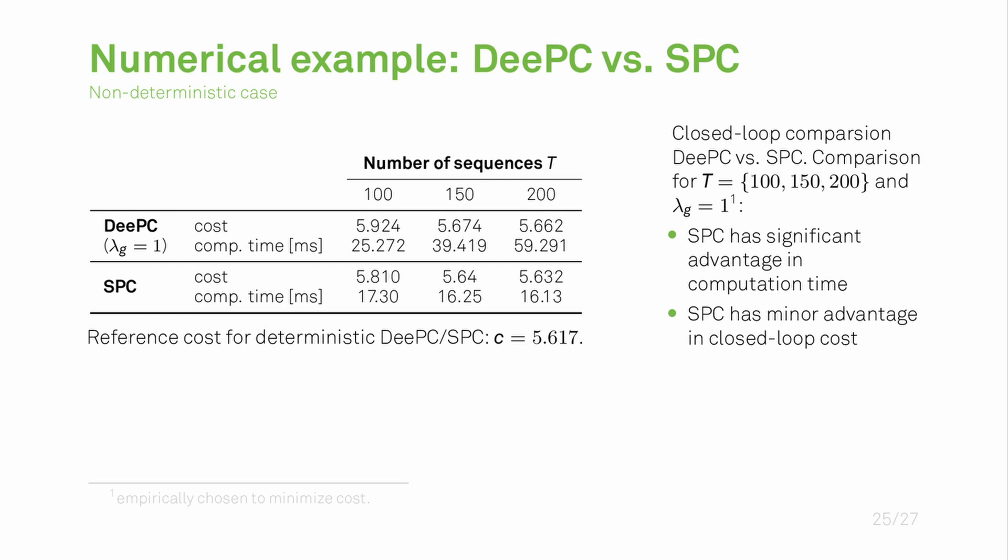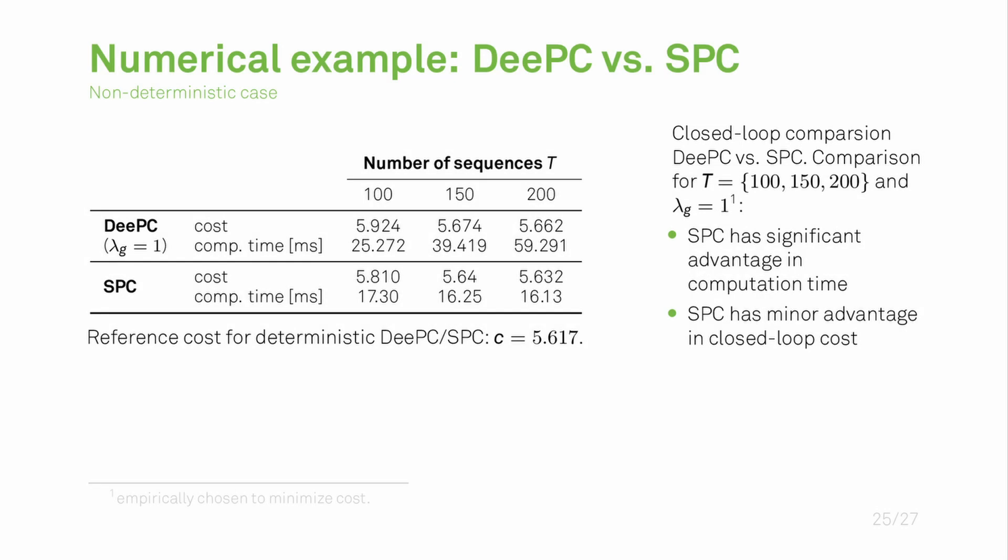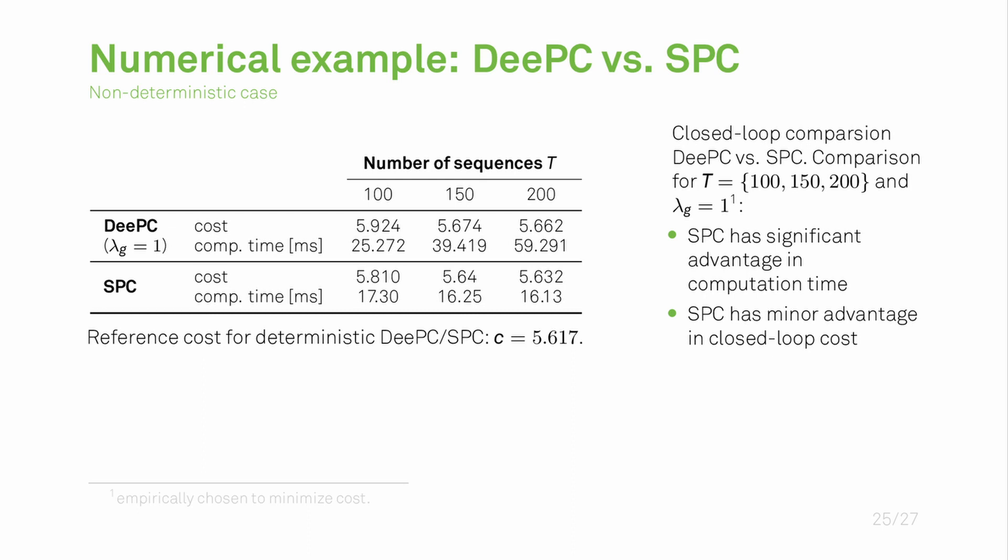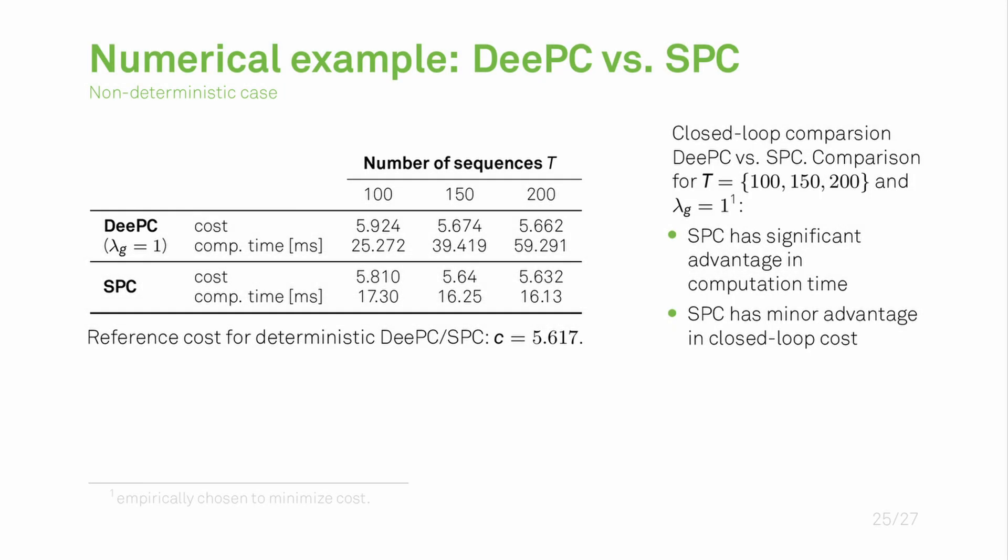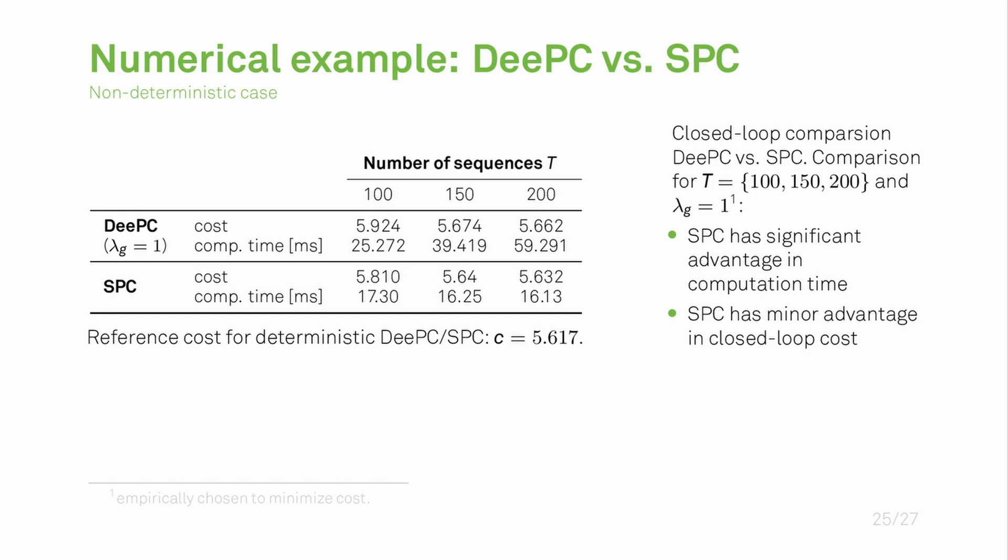On this slide we are presenting a further comparison of both methods for the non-deterministic setting. In this case we are doing closed loop comparisons so the problems are solved repeatedly with feedback information. We are comparing for varying number of recorded sequences: 100, 150 and 200 sequences. What we are seeing is that DeePC is always having a slightly higher cost than SPC in all three examples. But more importantly we are seeing that the computation time with DeePC is significantly increased compared to SPC, and it's growing with the number of sequences. With SPC the computation time stays constant. This is because the estimation of the prediction model is done offline and there of course we have increased complexity with more sequences, but this does not reflect on the online problem.